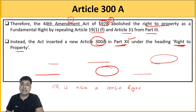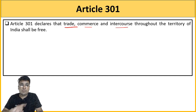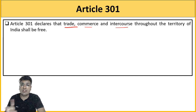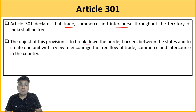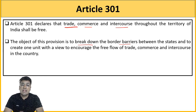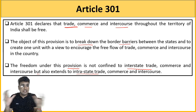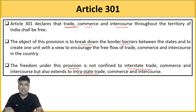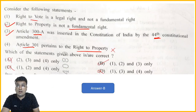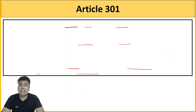The fourth statement is wrong because Article 301 is not about right to property. Article 301 states that trade, commerce, and intercourse throughout the territory of India shall be free. Its purpose is to break down border barriers between states and promote free flow of trade, commerce, and intercourse — both interstate and intra-state. Right to property is Article 300A, not 301. That's why the fourth statement is incorrect, confirming the answer as Option B.